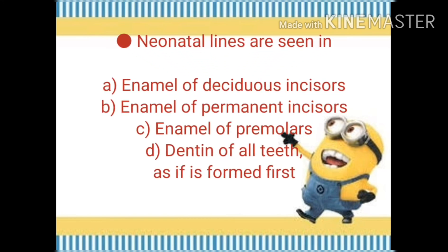The last slide of today's session covers neonatal lines. These lines are seen in: enamel of deciduous incisors, enamel of permanent incisors, enamel of premolars, or dentin of all teeth. The answer is option A — enamel of deciduous incisors.